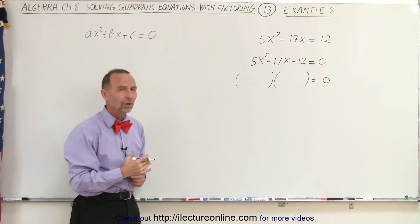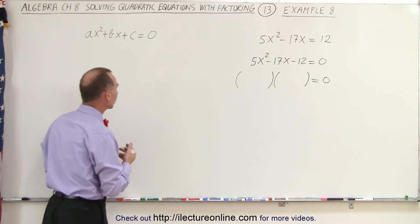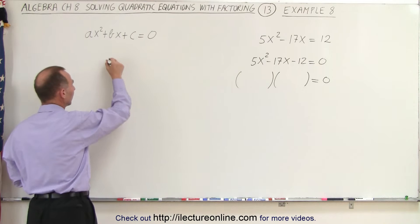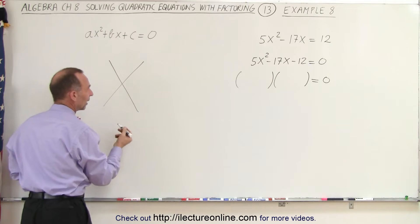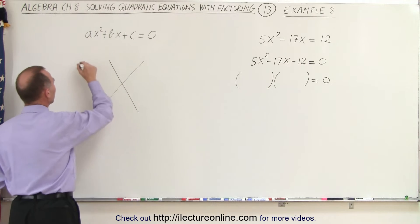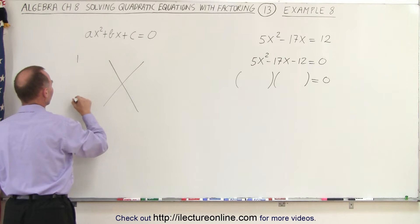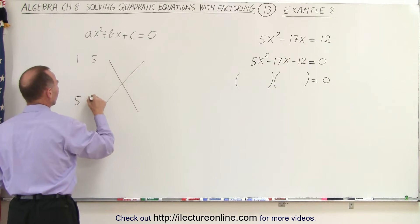But how do we find those two binomials? We could use the FOIL method. On the left side, the combinations to get 5 would be 1 and 5, and 5 and 1.